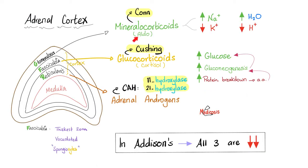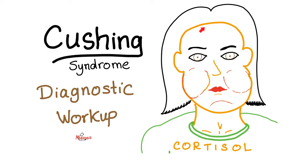If you have too much mineralocorticoids like aldosterone, this could be Conn syndrome — usually hyperplasia or a tumor in the zona glomerulosa of the adrenal cortex. But if you have too much cortisol from the zona fasciculata, this is Cushing syndrome. If a disease attacks all three layers and destroys them, leading to decreased secretion of everything, that is Addison disease. Now, for a patient presenting with symptoms similar to Cushing syndrome, let's go to the diagnostic workup.